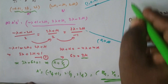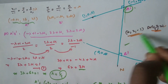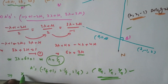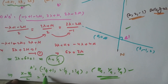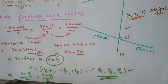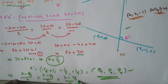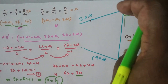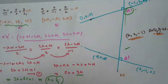This point (8/9, 2/9, 2/9) is A dash, a point on line N. We have a point on line N and the direction ratios 2, 2, -1. So the equation of line N is: (x - 8/9)/2 = (y - 2/9)/2 = (z - 2/9)/(-1). This is the equation of the normal to both lines. In this way we can find the length of the common perpendicular as well as its equation.